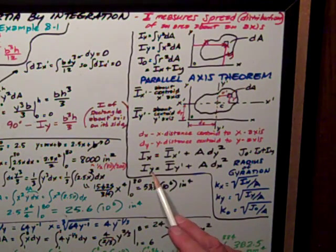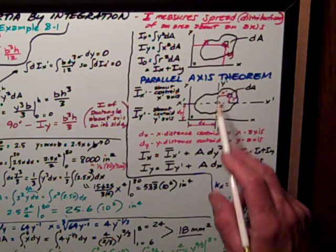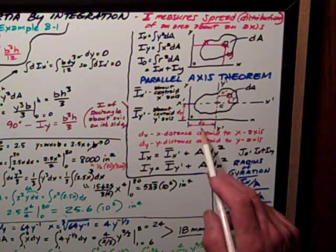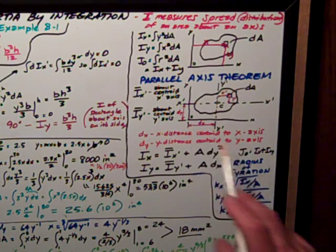Same thing with the Iy. It's Iy-prime, the centroidal moment of inertia, plus Adx-squared, where dx is the distance from the centroid y-prime axis to the y-axis.